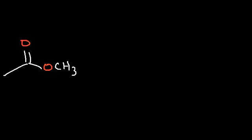Anytime you react an acid chloride or any one of the carboxylic acid derivatives with an amine, you're going to get an amide. If you add an alcohol to a carboxylic acid derivative, you will get an ester. If you add water, you'll get a carboxylic acid. Now what's going to happen if we react an ester with water under acidic conditions and under basic conditions?